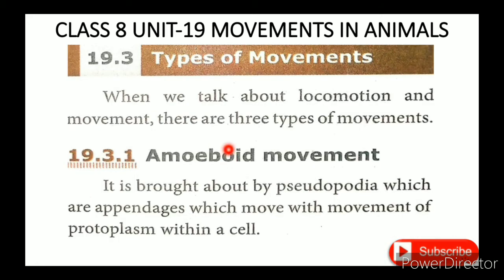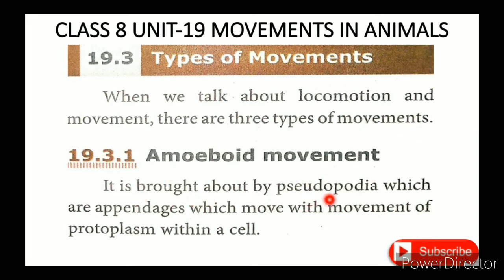There are 3 types of movements. The 1st movement is amoeboid movement, brought about by pseudopodia, which are appendages that move through the movement of protoplasm within a cell. Pseudopodia — pseudo meaning false, and podia meaning foot — describe temporary extensions of the cell driven by protoplasm movement.